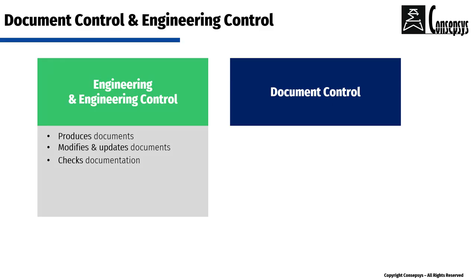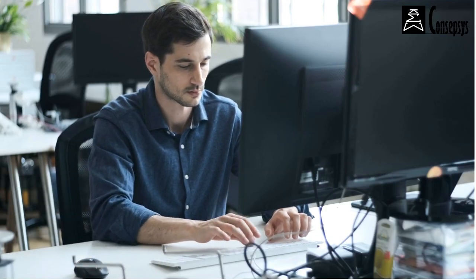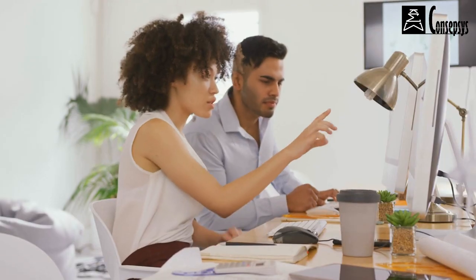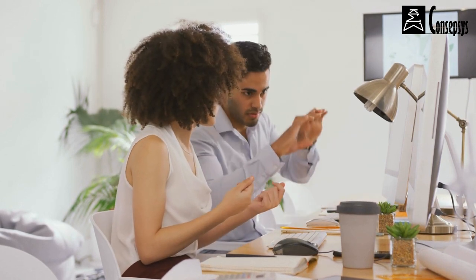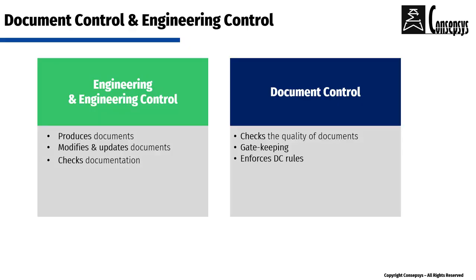Document control checks the quality of documents and drawings, including metadata, templates, legibility, etc. They are gatekeepers after quality checks. If an error was found, they send back the documents to engineering for modification, and they ensure the rules for documents and drawings are followed.